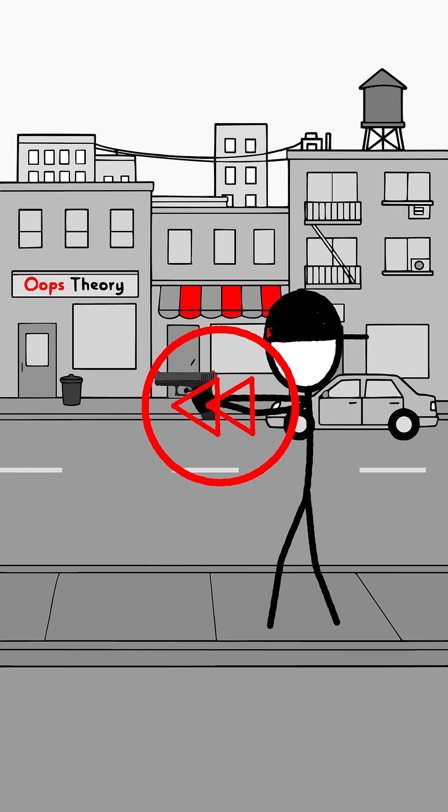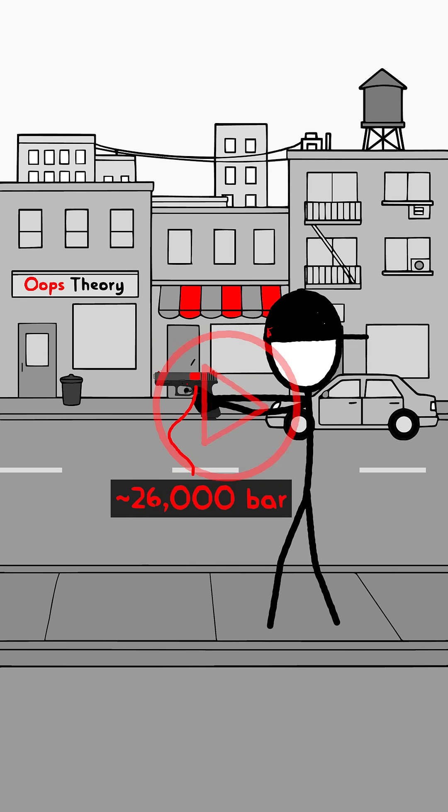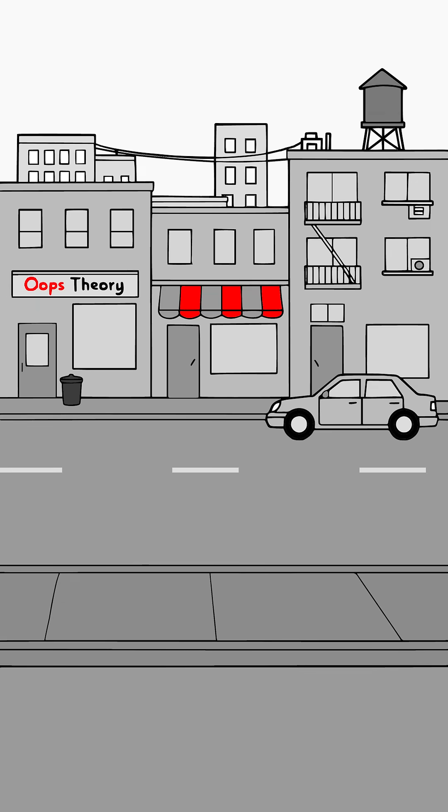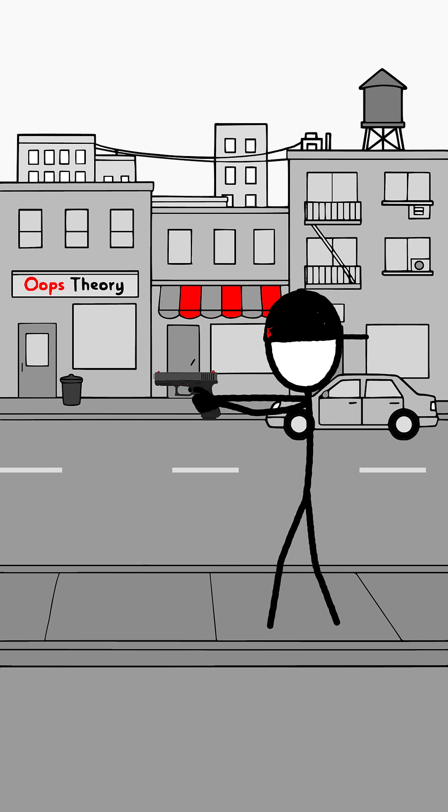The bullet won't even have time to leave the barrel. The pressure will rise from the usual 2,600 bar to an insane 26,000, and the Glock will simply explode in your hands. But if we imagine that we somehow managed to fire it,